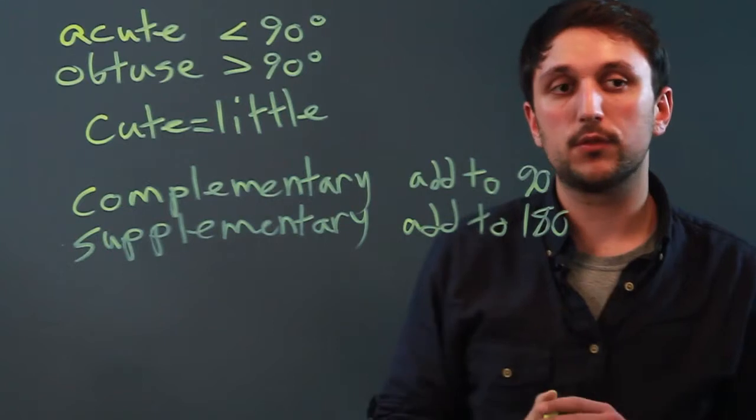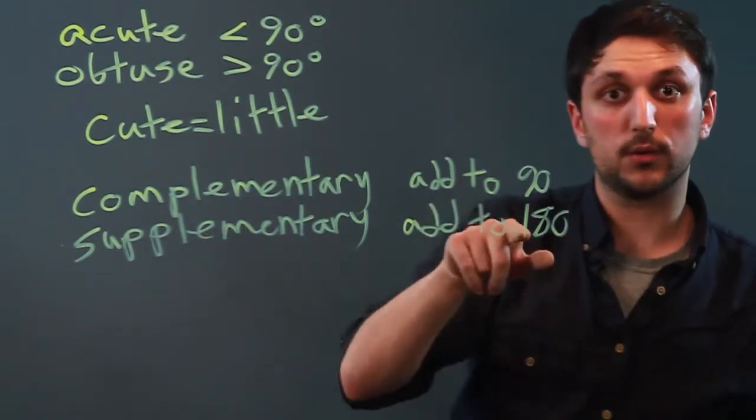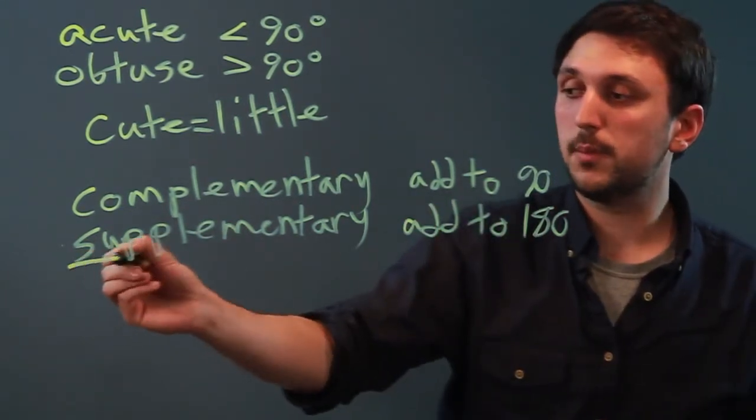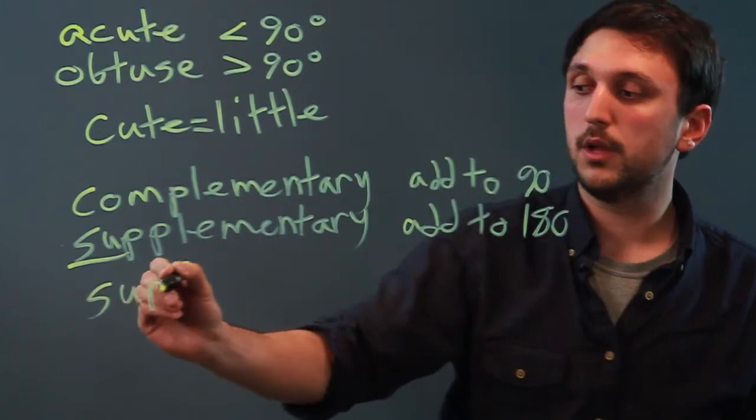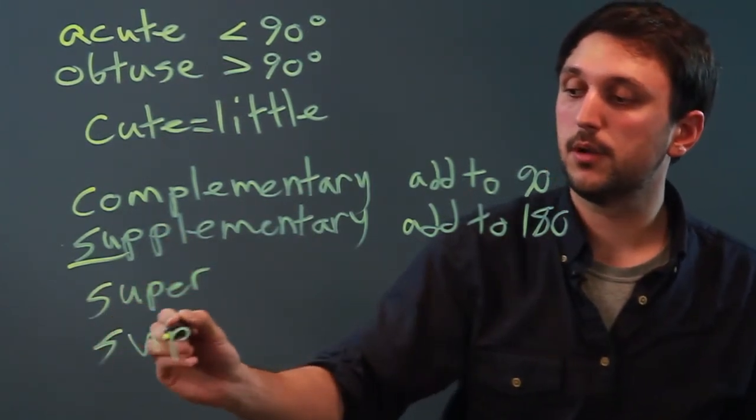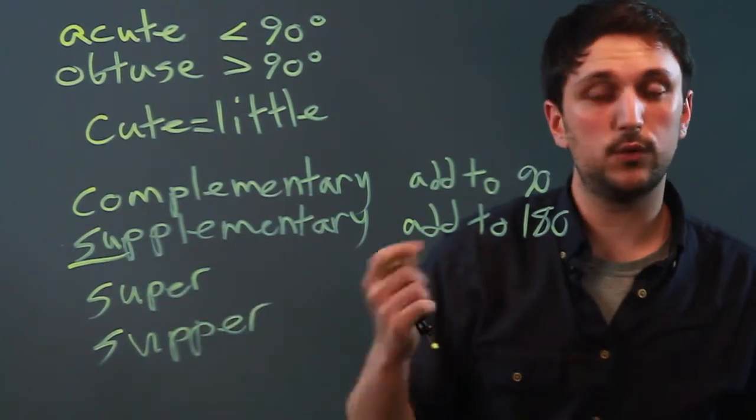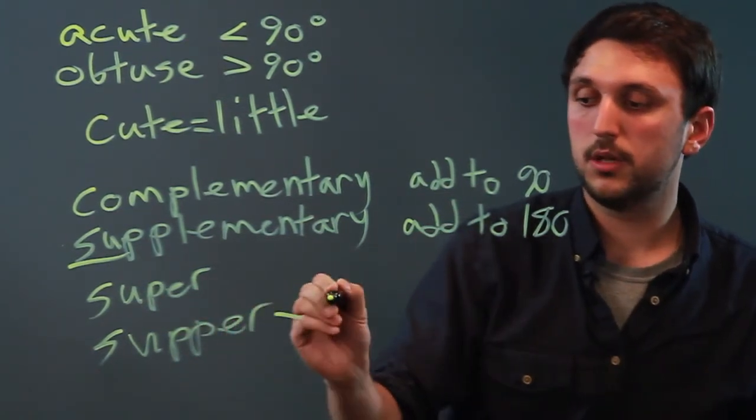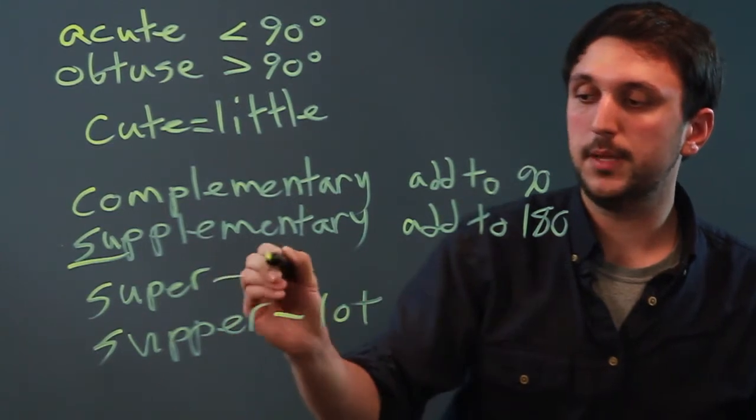So how do we remember the difference? Well, supplementary are bigger. You can think of 'sup' like super, and super's big. Or you can think of 'sup' like supper. At supper, you want a lot of food, not a little food, so it's big. Supper, a lot, big.